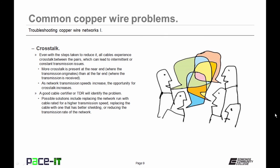Then there's crosstalk. Even with the steps taken to reduce it, all cables experience crosstalk between the pairs, which can lead to intermittent or constant transmission issues. More crosstalk is present at the near end, where the transmissions originate, than at the far end, where the transmissions are received. As network transmission speeds increase, the opportunity for crosstalk increases.